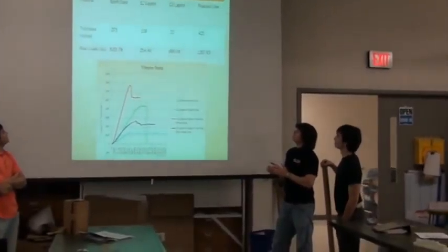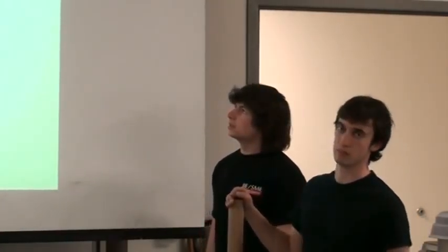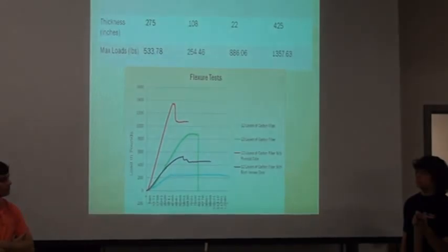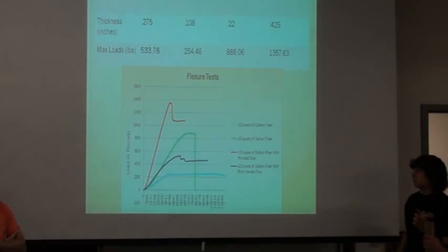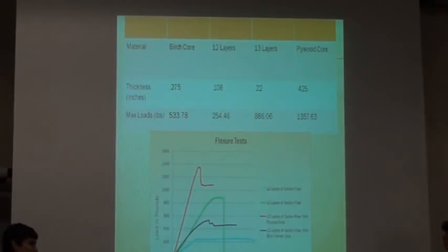The reason why the plywood core is stronger, a lot stronger, is because it's a lot thicker than the birch core. Now, the birch core is still actually mathematically stronger because if the plywood core is twice the size of the birch core, then the plywood core should be eight times as strong. Only eight times the weight. But, since it's not, then the birch core is actually stronger for how much thickness it has.